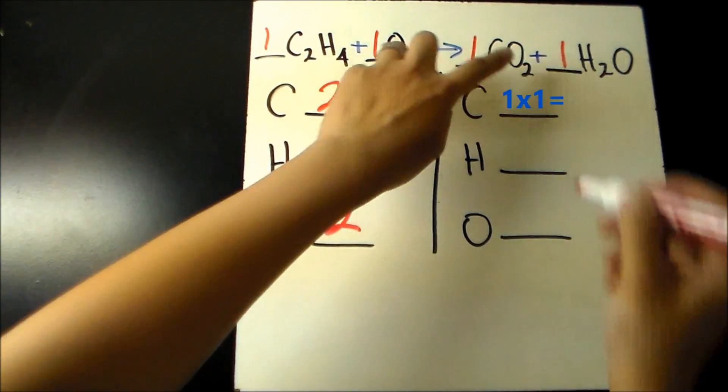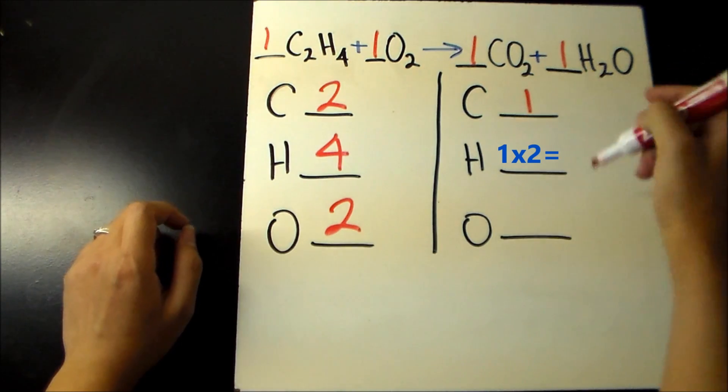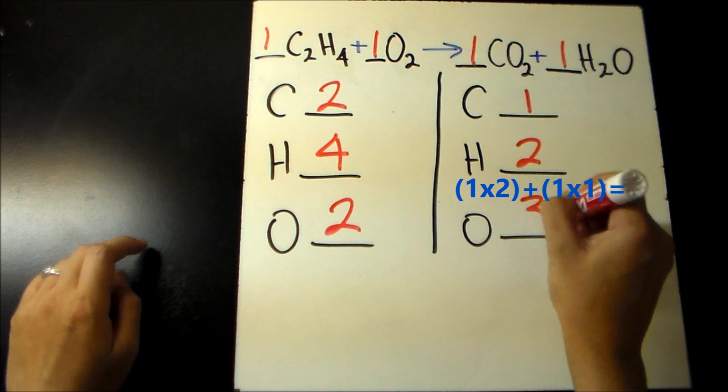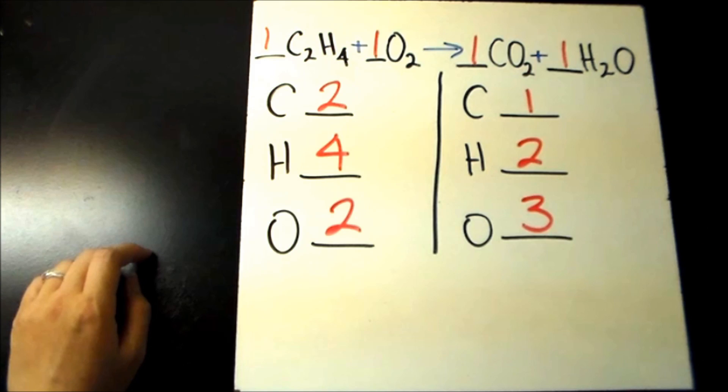On the product side, there are 1 times 1 equals 1 carbon, and 1 times 2 equals 2 hydrogens. Oxygen is in 2 different compounds, so there are 2 oxygens from CO2 and 1 oxygen from H2O, giving a total of 3 oxygens on the right hand side.